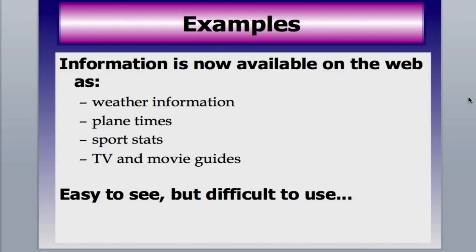A similar example would be calendars. It's really hard to pull out information from an online calendar and repurpose it. Google has changed this because they've added an API — another layer where you can get information from a Google calendar. But if you were to write your own calendar in HTML or XHTML with some JavaScript, it would be very hard for people to pull that information and reutilize it on their cell phone or portable devices.